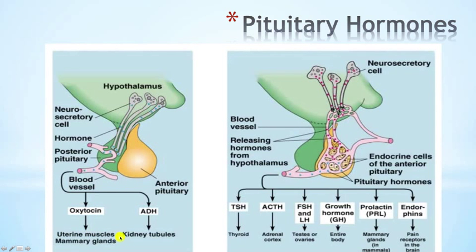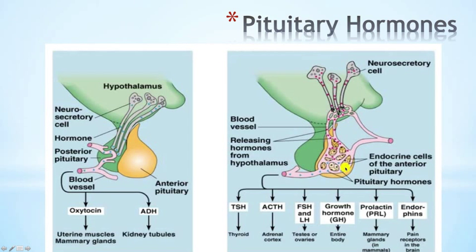In the anterior pituitary gland we had the portal circulation, which began with the superior hypophysial artery that went to the median eminence. The releasing factors from the hypothalamus were released, went through a portal vein, and then went to the anterior pituitary gland where we had two types of cells: acidophils and basophils. The acidophils were responsible for the production of growth hormone and prolactin.